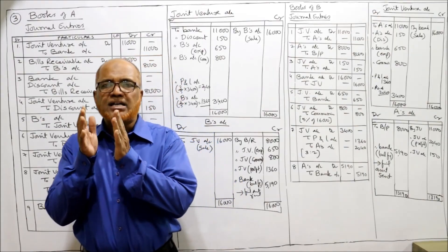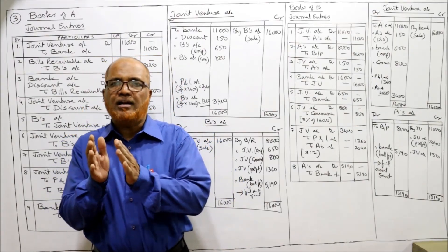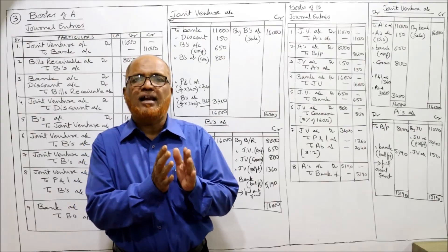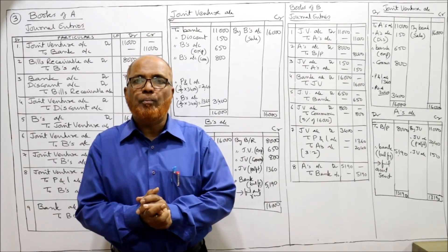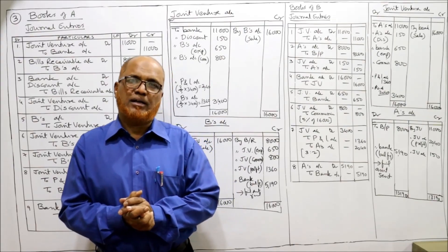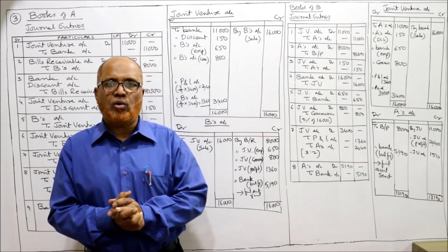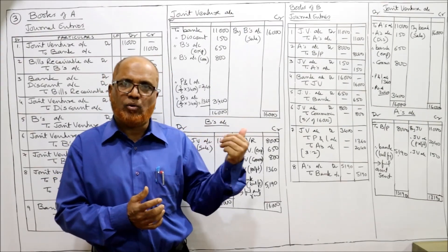So this is the complete problem in which we have passed the journal entries and ledger accounts in the books of both the parties - A co-venturer and B co-venturer.